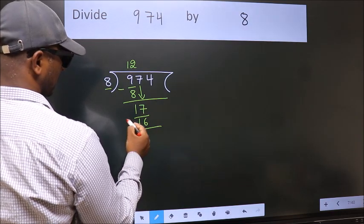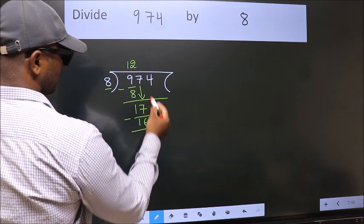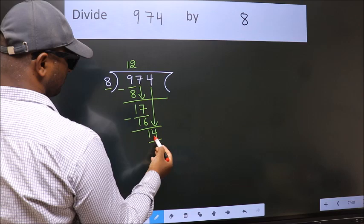Now we subtract. We get 1. After this, bring down the beside number. So 4 down, making 14.